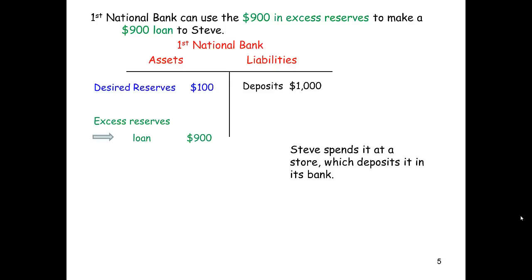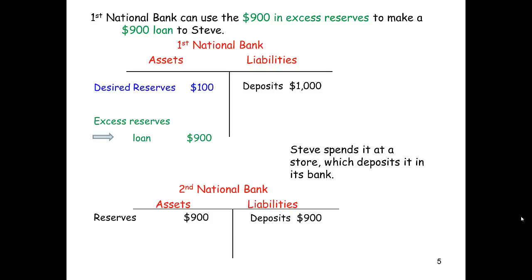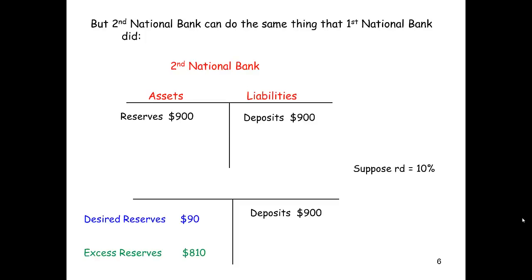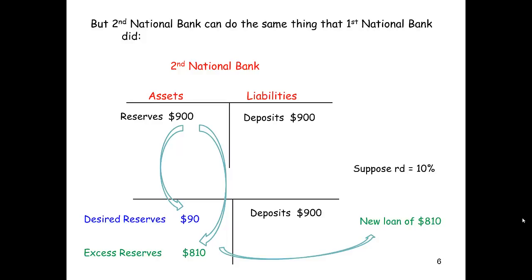Now suppose Steve takes his loan, spends it at a store, which then deposits it at its bank — let's say Second National Bank. Second National Bank's liabilities increase by $900 and its reserves increase by $900. But Second National Bank can do the same thing First National Bank did. With the same reserve deposit requirement, it can split its reserves into desired reserves of $90 (10% of $900) and excess reserves of $810, which it can then lend out as a new loan of $810.